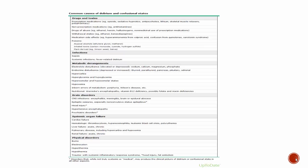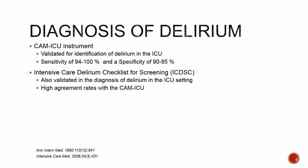This table from UpToDate covers common causes of delirium and confusional states. When considering delirium, we first check the medication reconciliation for causative agents. Patients withdrawing from substances, septic patients, those with metabolic derangements, severe electrolyte abnormalities, seizures, traumatic brain injury, multi-system organ failure, severe trauma, or burns are all at risk for developing delirium.